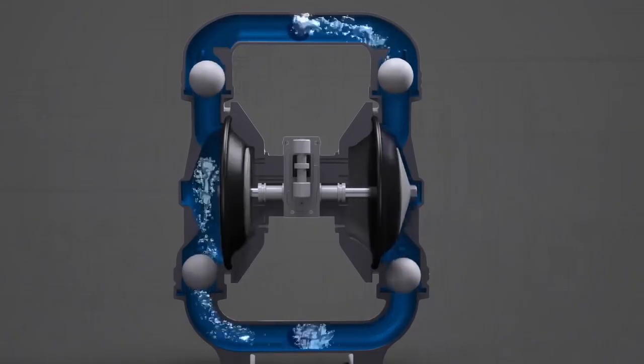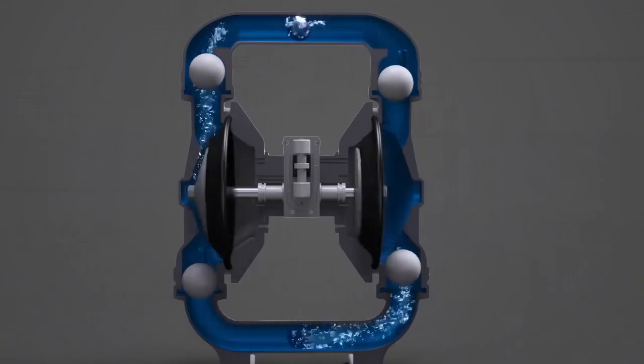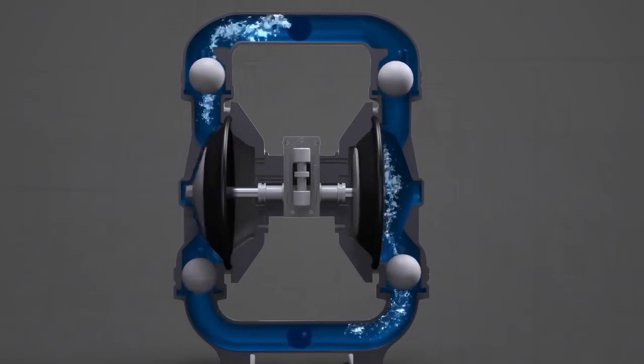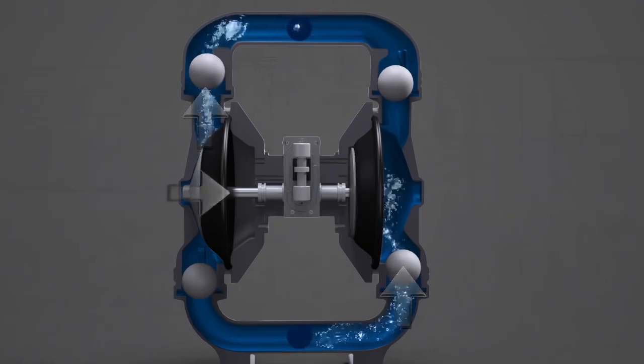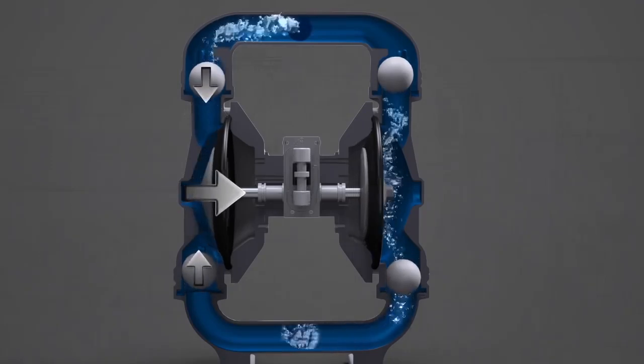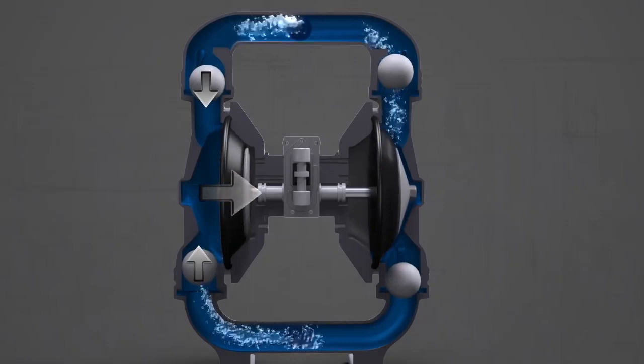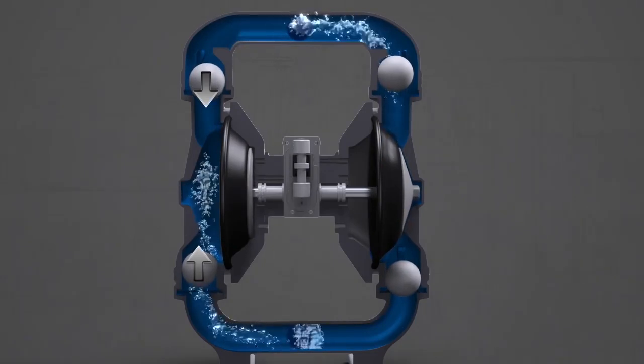Two diaphragms, connected by the diaphragm rod, work in unison to create the liquid motion of the pump. While one side is in suction mode, the other is in discharge mode. As a diaphragm moves inward, it creates suction. This suction motion causes the balls to move towards each other. As this happens, the top valve closes and the bottom valve opens. This allows liquid to enter the chamber through the bottom port.